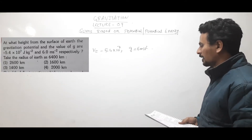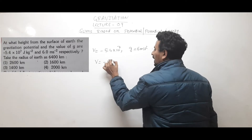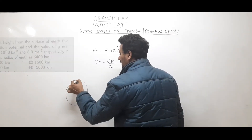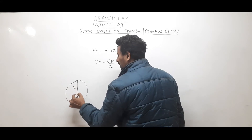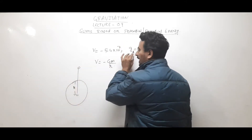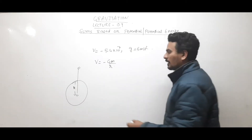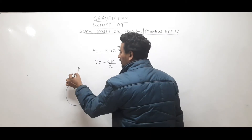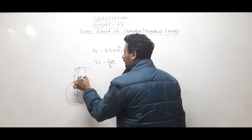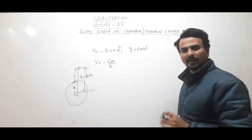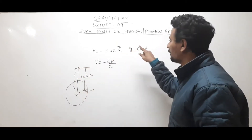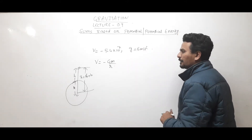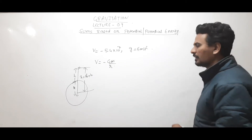The potential is given by -GM/r, where r equals Re plus h, since we measure from the center of the earth. At this height h, the value of potential is -5.4×10⁷ and g is 6 m/s². Let h be the height from the surface of the earth where potential equals -5.4×10⁷ and g equals 6 m/s².